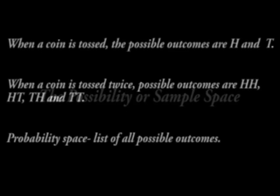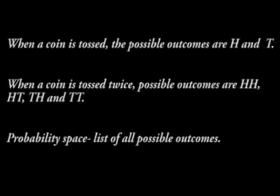The possibility or sample space. When a coin is tossed, the possible outcomes are head and tail. When a coin is tossed twice, or two coins are tossed at the same time, the possible outcomes are HH, HT, TH and TT. Probability space is the list of all possible outcomes, also called the sample space.